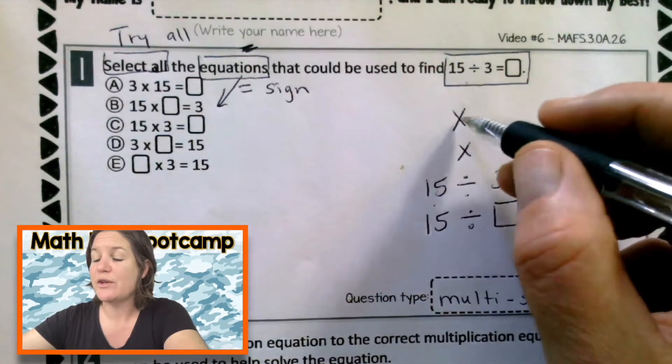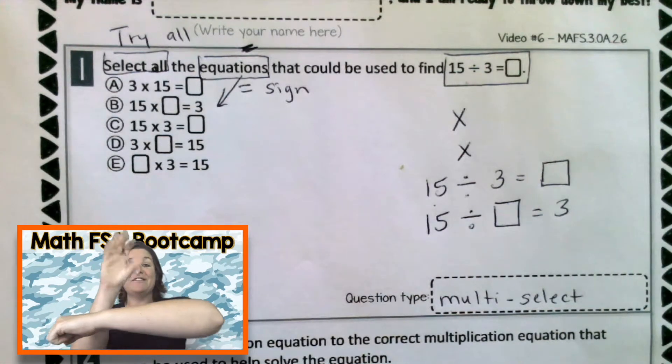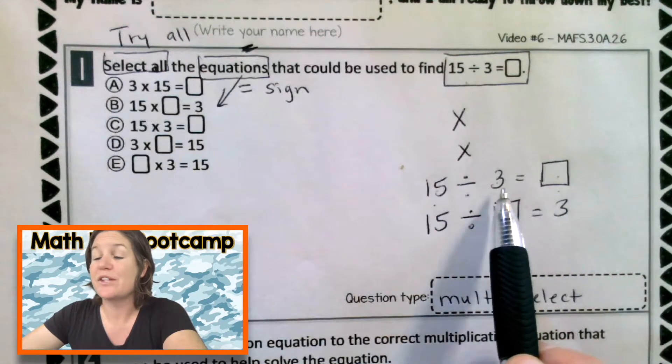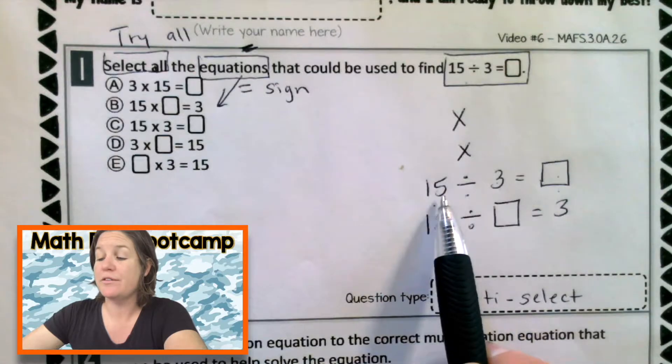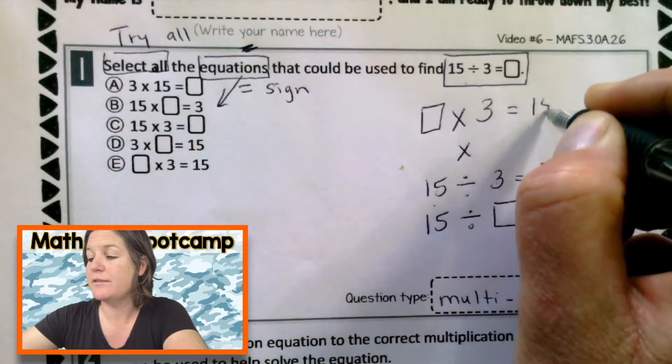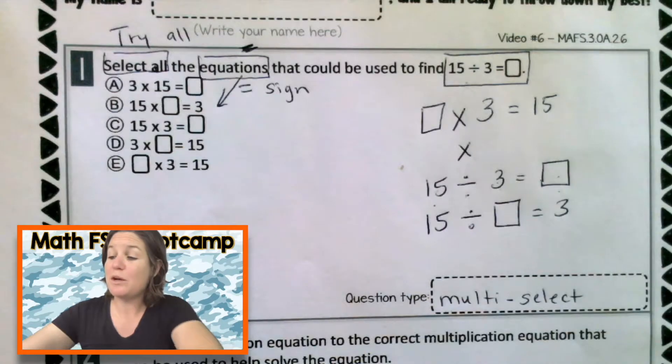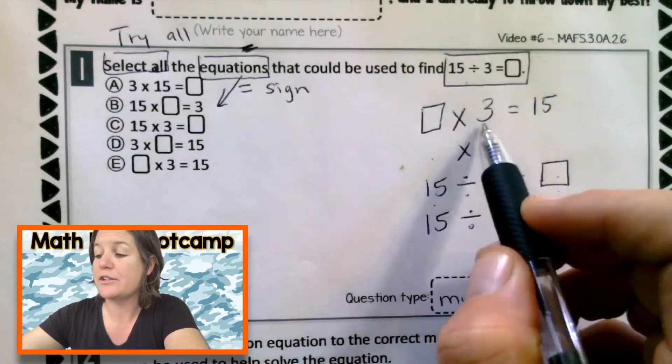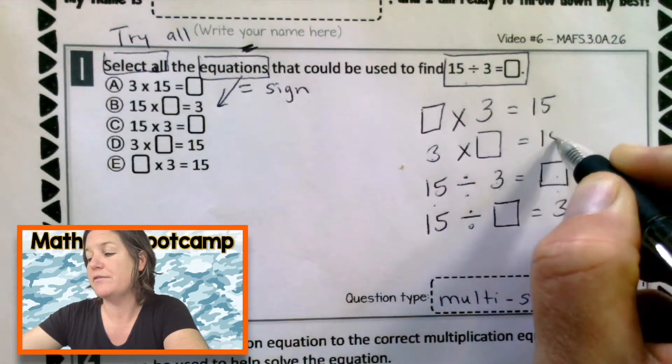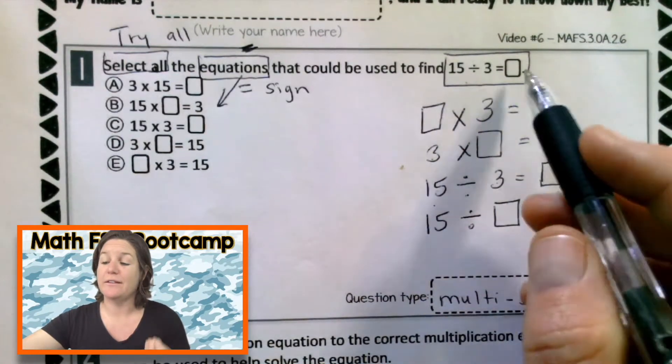And then we also have multiplication. So what we do is go in reverse there because multiplication and division are inverse operations. I'm going to go what times 3 equals 15. And then let's flip-flop those factors and use the commutative property to flip-flop these two factors around because 3 times what equals 15. So those are all of the different equations that could be used to find this one.